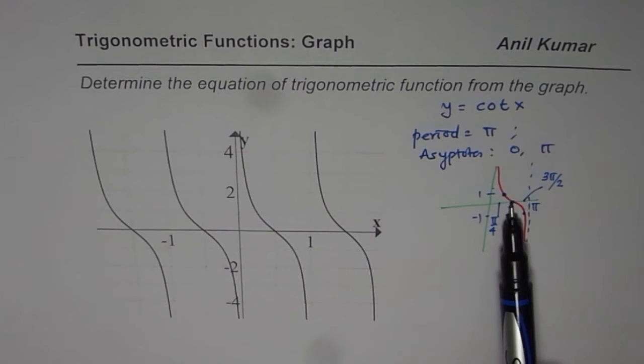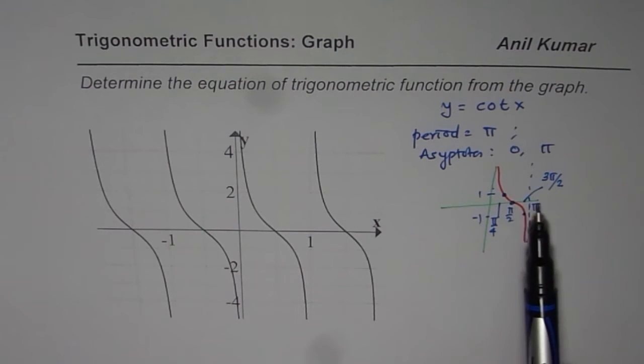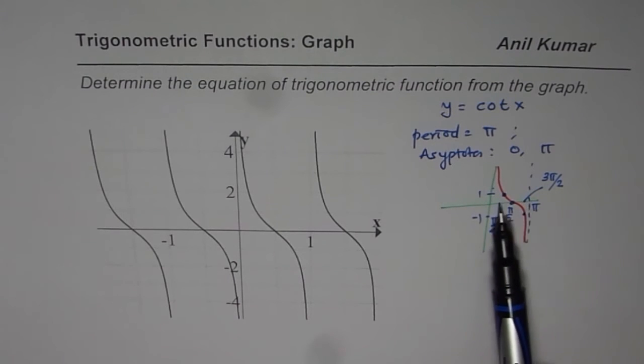And this point 0 helps us to figure out the horizontal translations. Even those vertical asymptotes can tell you about horizontal translations. Now let us analyze our function.